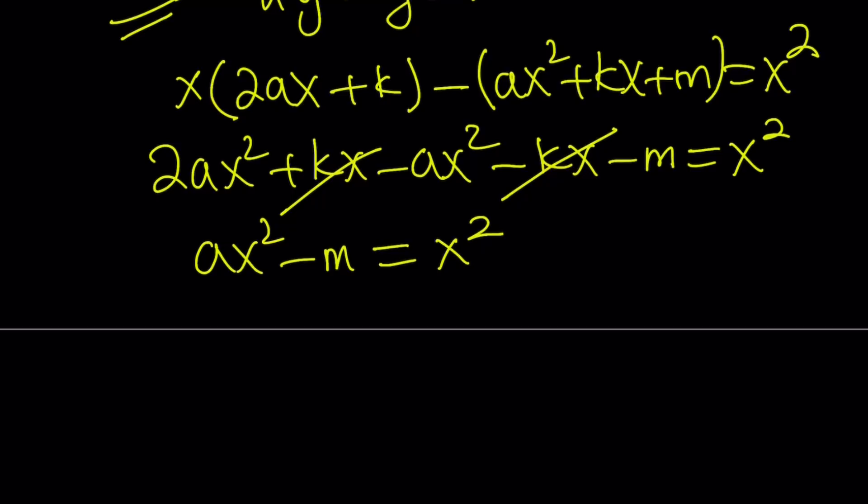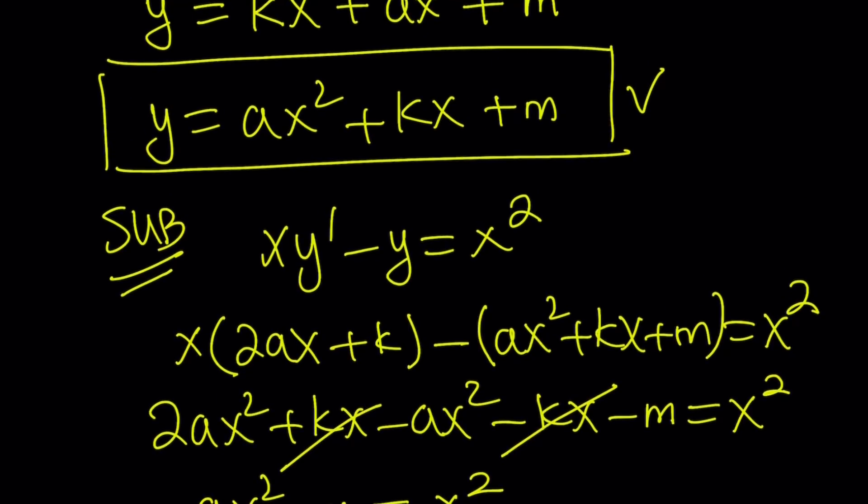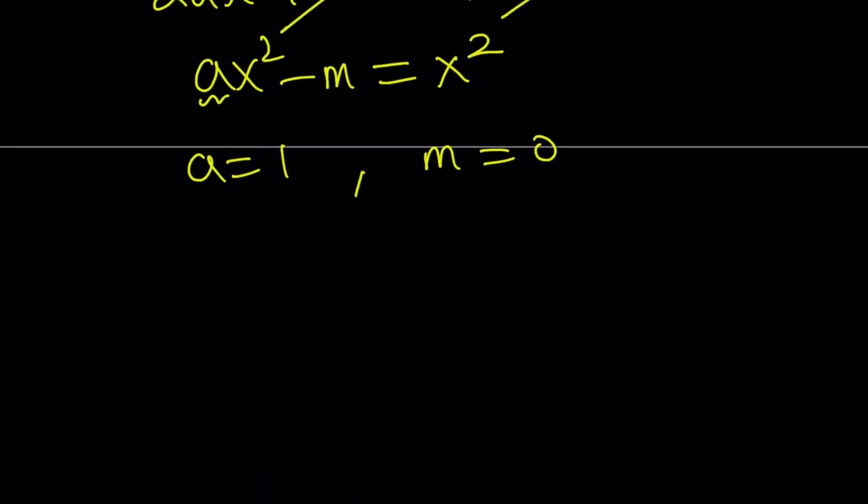This means that a is equal to 1 from here. And there's no constant on the right hand side. So a is equal to 1, m is equal to 0. Remember, our solution was in this form. Therefore, we can basically write it as y equals x squared plus kx. Alright? Awesome.